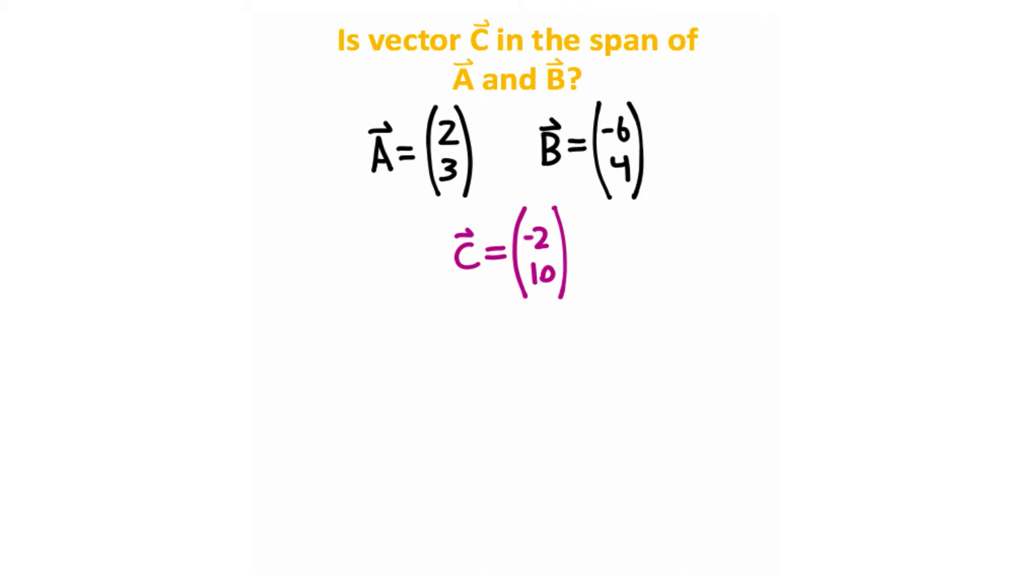Now what this question is asking is if there's some constant we can multiply by vector A plus some constant multiplied by vector B which will give us vector C.